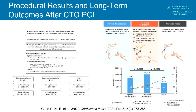One issue with CTO PCI is you will inevitably fail sometimes. But is there something worse than failing? This study looked at patients with optimal recanalization, those who failed, and those who underwent stenting with suboptimal results — meaning loss of a significant side branch, TIMI flow of one or two, or residual stenosis greater than 30 percent. Suboptimal recanalization was associated with a higher five-year cardiac death or MI rate than either of those arms.